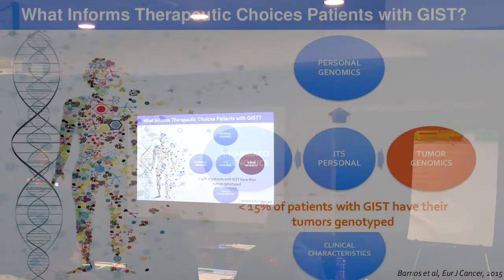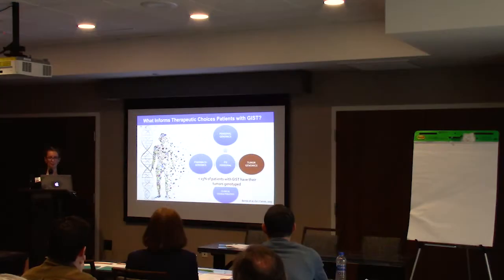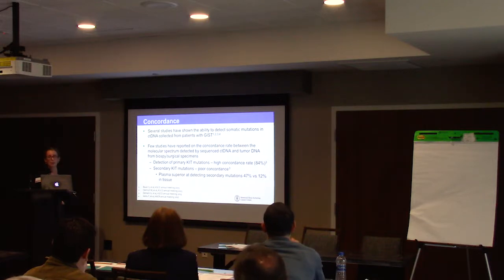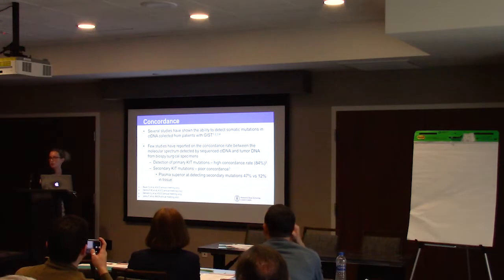What informs therapeutic selection in GIST? It includes both patient and genomic characteristics. A study from 2015 suggested that less than 15% of patients with GIST have their tumor genotyped. Several studies have shown the ability to detect somatic mutations in ctDNA collected from patients with GIST.